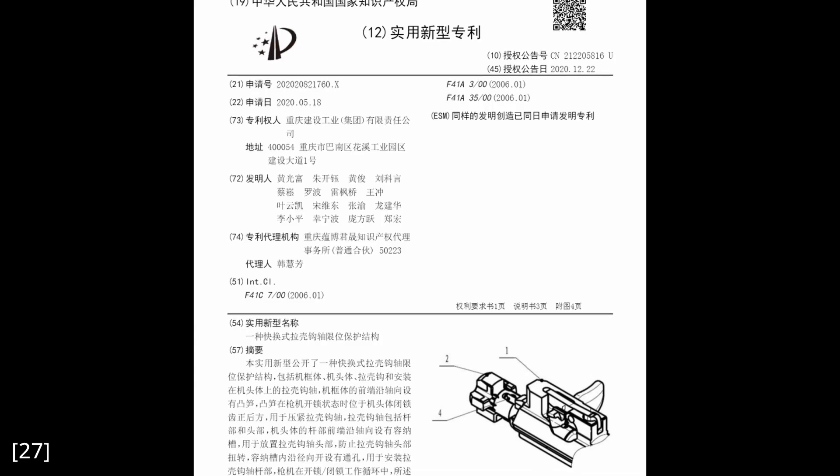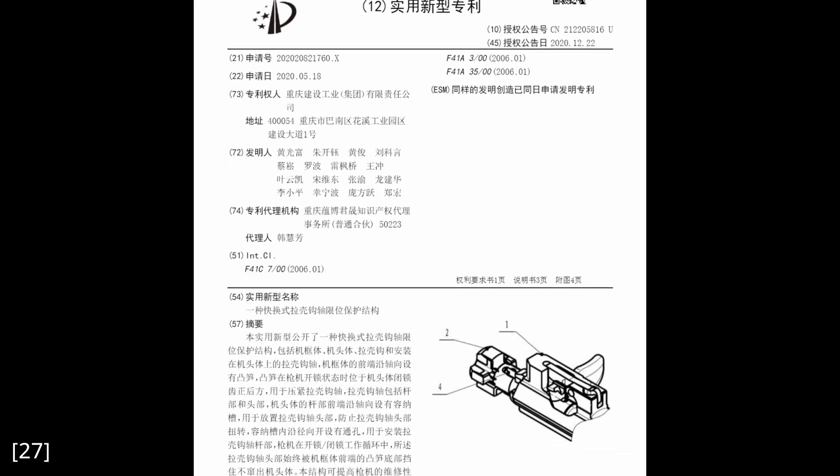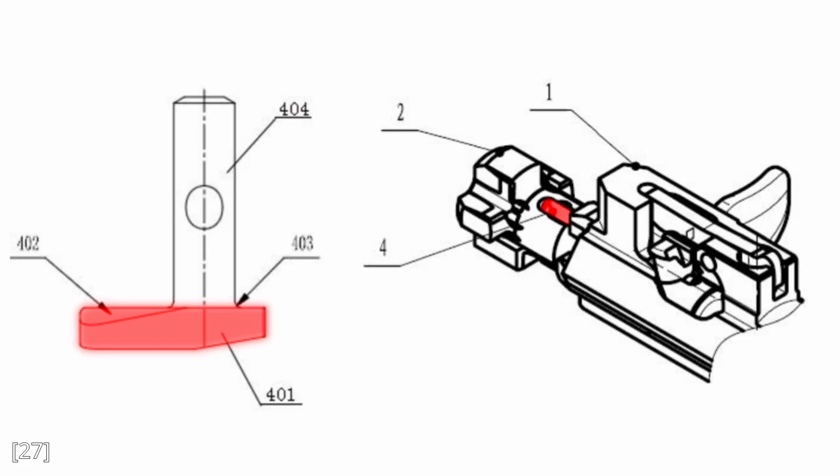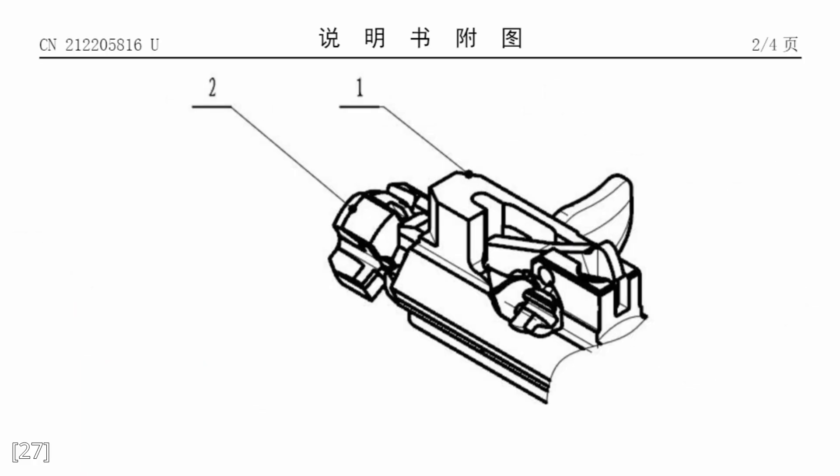Now onto the next detail. I located this other patent, which explicitly states that the purpose of this tab on the extractor pin is so that this nub on the bolt carrier can retain the extractor pin in the bolt. So yeah, I pretty much hit the nail on the head for this one in my last video. And yeah, this patent clearly shows the cam pin locking mechanism. You can see the locking lever and the slot on the cam pin that it locks into.